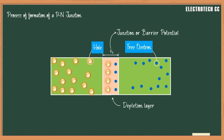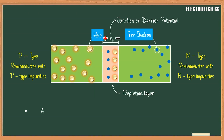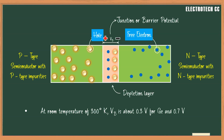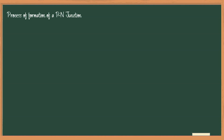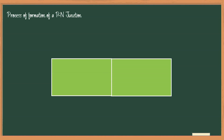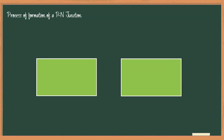This potential difference is called junction potential or barrier potential. At room temperature of 300 degrees Kelvin, VB — the barrier potential — is about 0.3 volt for germanium and 0.7 volt for silicon. This value depends on the doping density, electrical charge, and temperature.